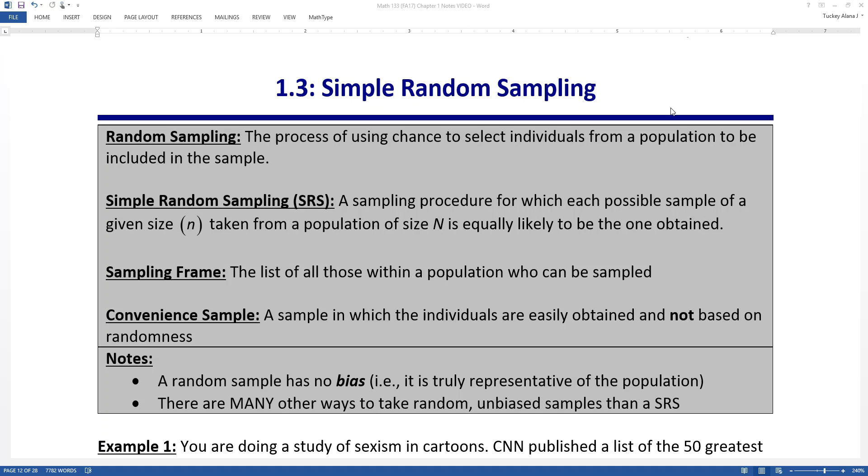A random sampling process is any process that uses chance or randomness to select the individuals from the population that will be included in your sample. You're using some kind of random process to choose people, not a biased process or some kind of convenient process. There are lots of different ways to do this, and we'll talk about several of them.